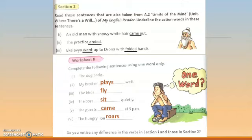All these are intransitive verbs. Do you notice any difference between the verbs in Section 1 and those in Section 2? In Section 2, all sentences don't require an object — so they are intransitive verbs. In Section 1, objects are required — so those are transitive verbs.